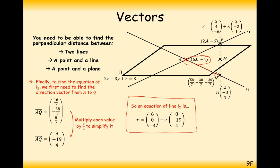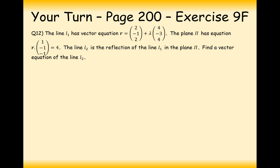To summarise: first we intersected the given line with the plane to find coordinate A. Then we reflected P in the plane to get coordinate Q. Then we connected A and Q together to give the equation of our line. That is all we have to do. Now it's your turn — pause the video and try this final question of further maths AS level.